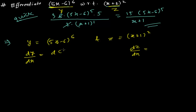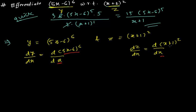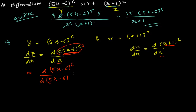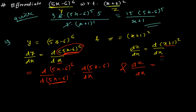For dy/dx, we differentiate (5x − 6)^6 with respect to x. The base here is 5x − 6, not x itself, so they don't match directly. You differentiate (5x − 6)^6 with respect to (5x − 6), and then multiply by the derivative of (5x − 6) with respect to x. Similarly for dz/dx, differentiate (x + 1)^2 with respect to (x + 1), then multiply by the derivative of (x + 1) with respect to x.